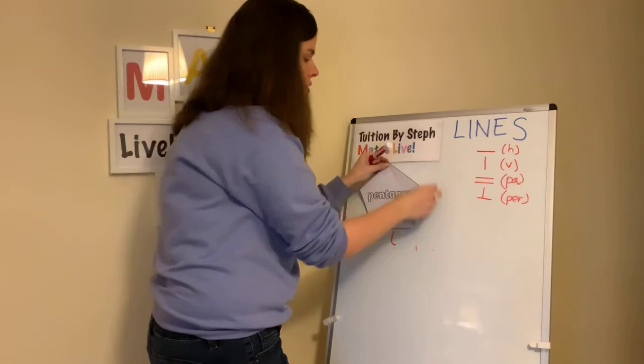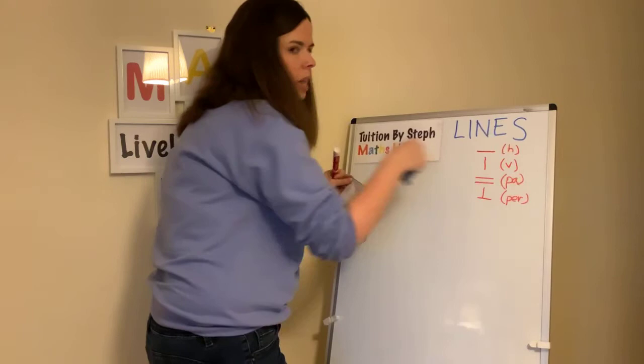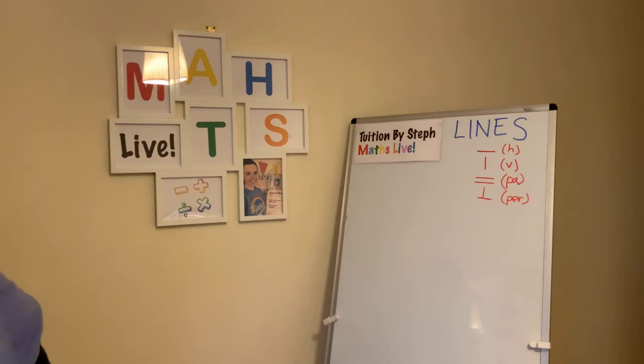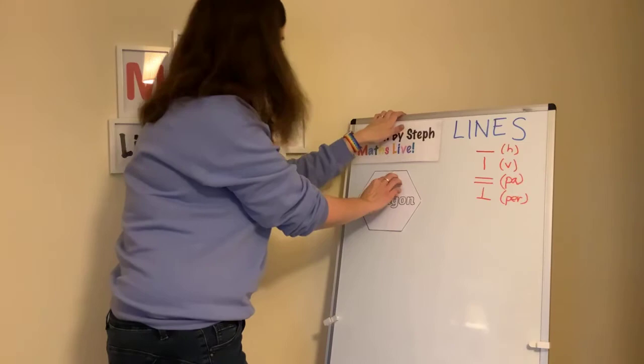Your turn. I'm going to give you a shape, and I'd like you to draw it or write the facts of which lines you think it has. Let's have a look — a hexagon. Off you go. Try a hexagon.